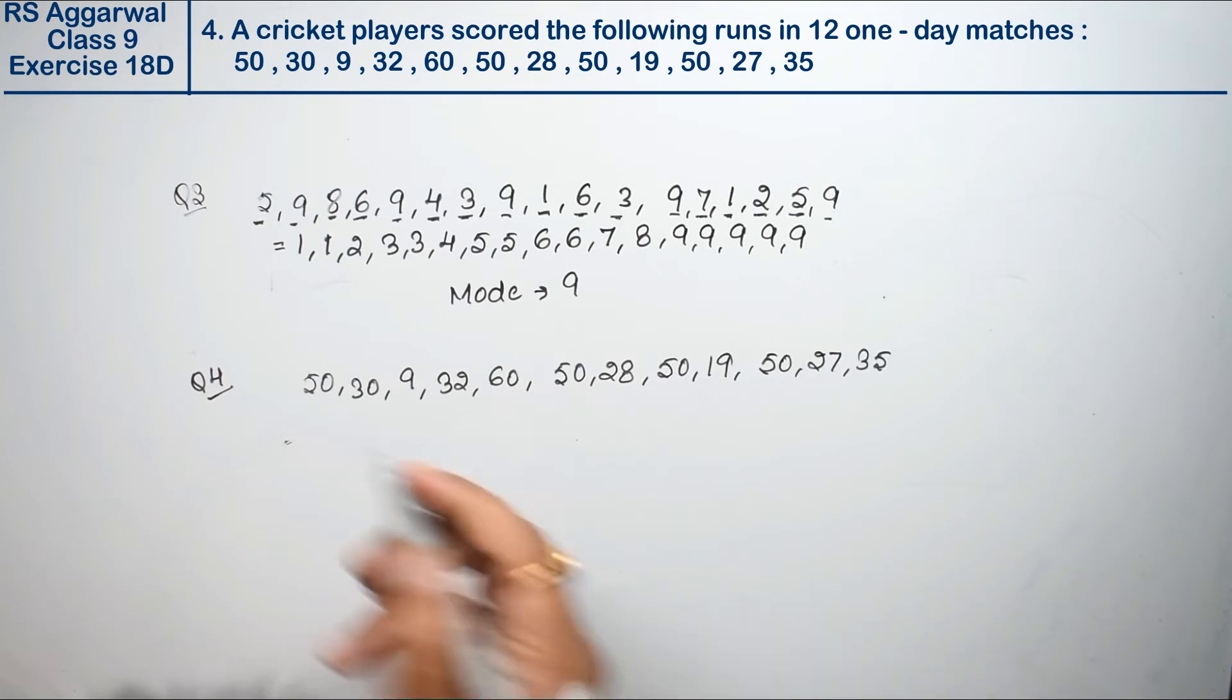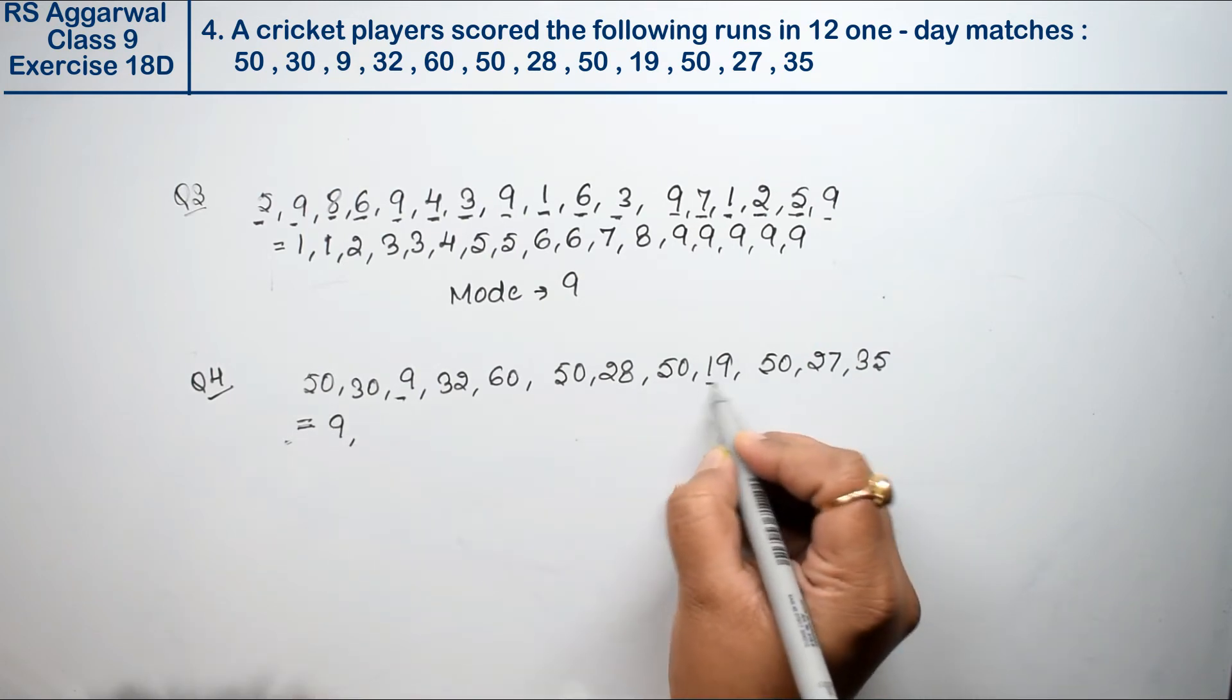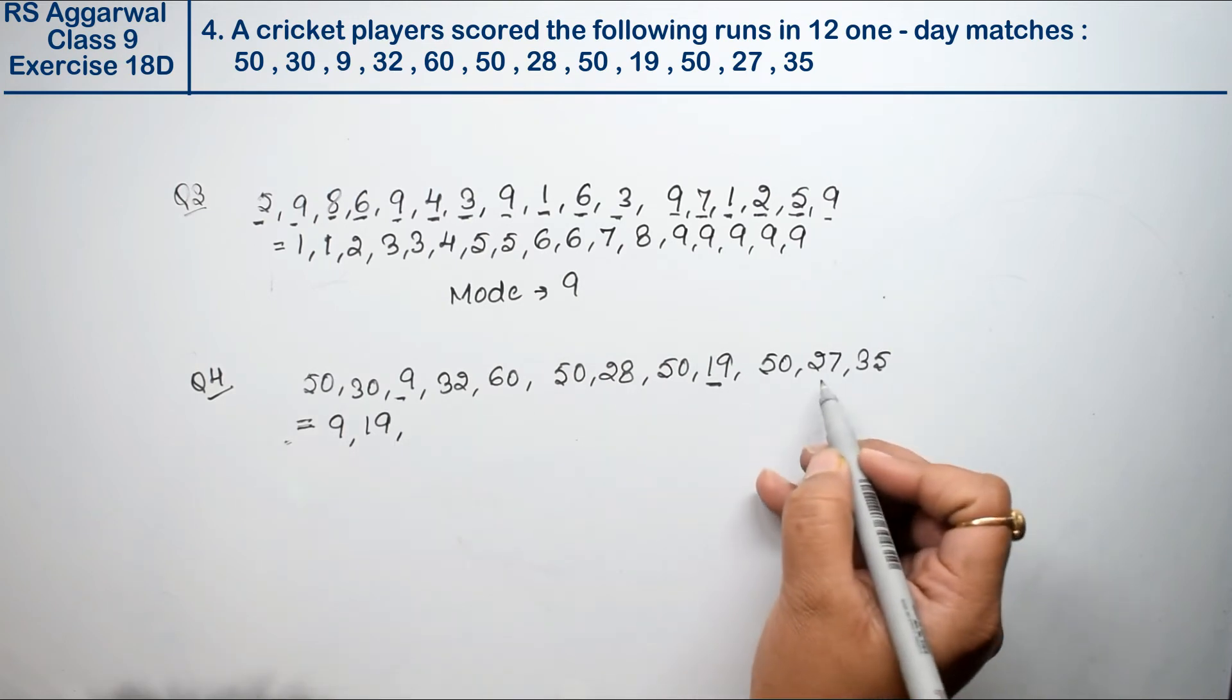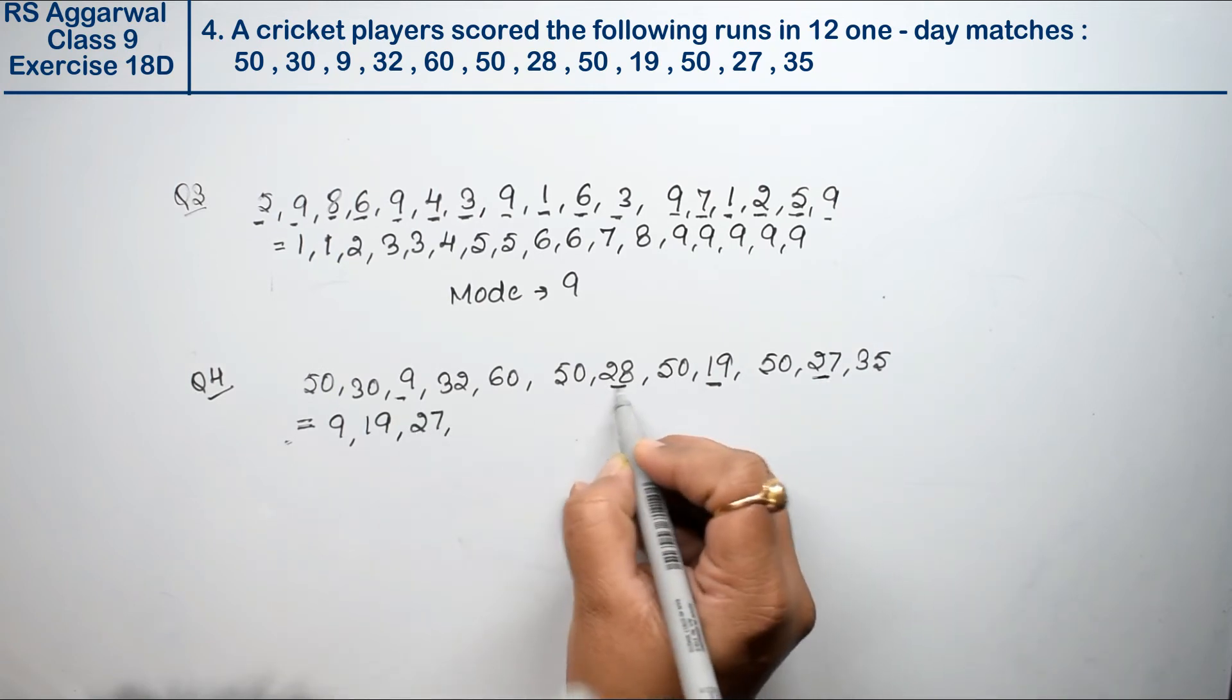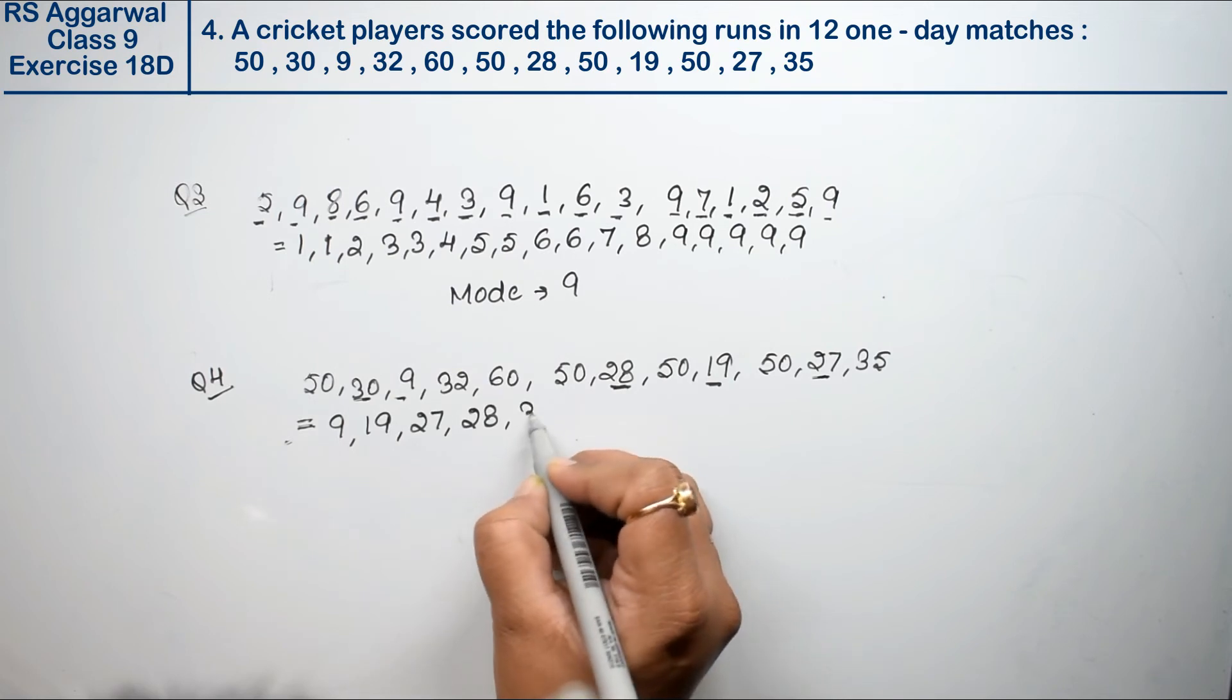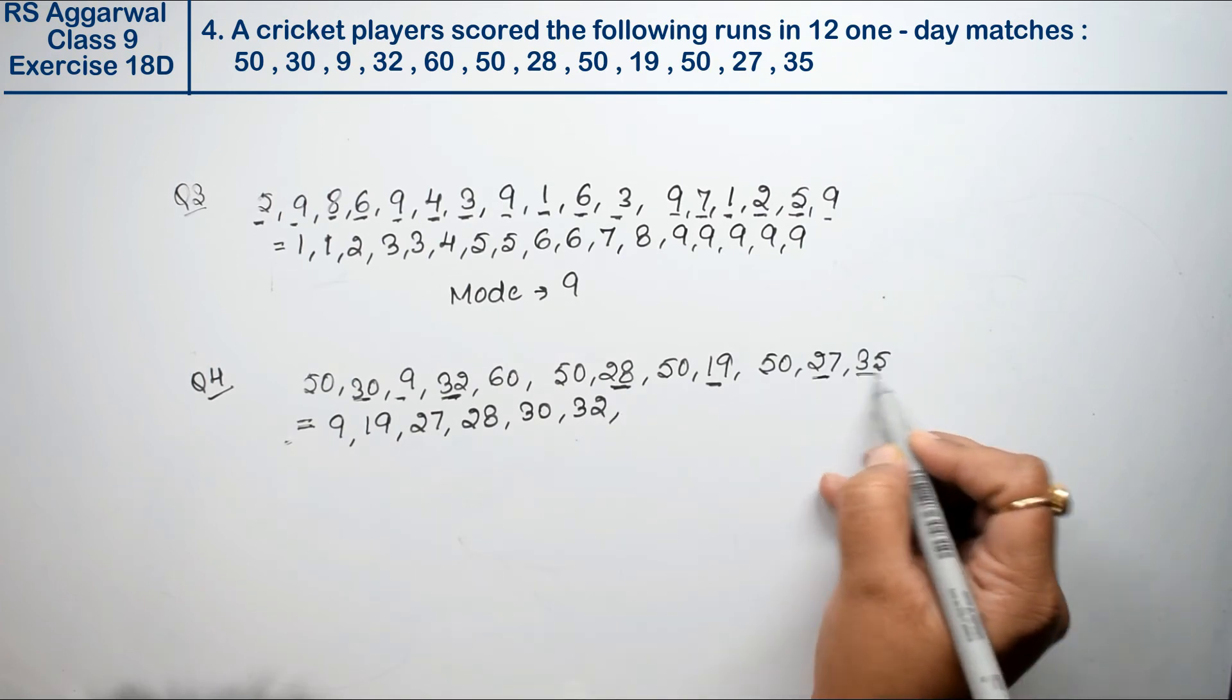We will find the mode. For the mode, we will do ascending order. So what is the first one? 9, then 19, then 27, then 28, then 30, then 32, then 35.